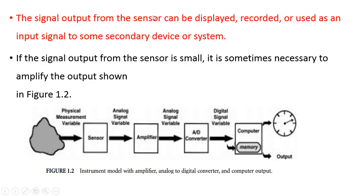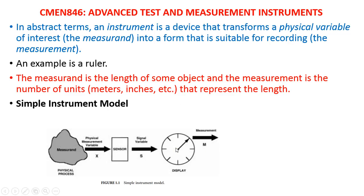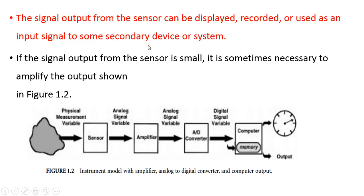The function of the sensor is to detect the presence and amount of that physical variable. We can display it, record it, or feed it to another device. If the output from the sensor is very small, we use amplifiers to increase the strength of the signal. Apart from amplification, we can do conversions — for example, using an analog-to-digital converter — and then store it in computer memory or deliver it to another output.